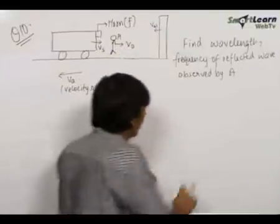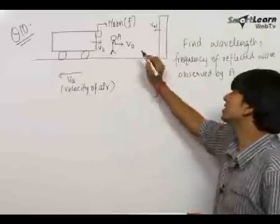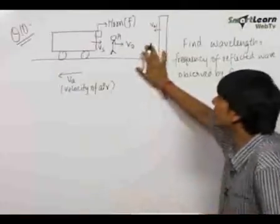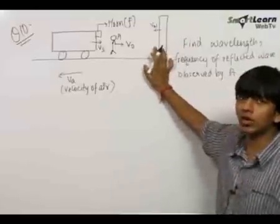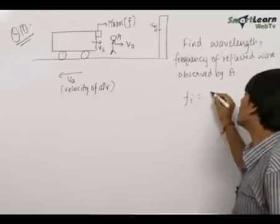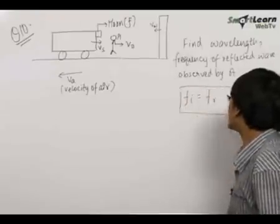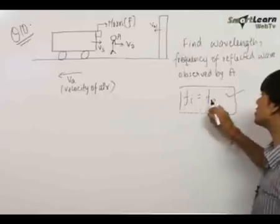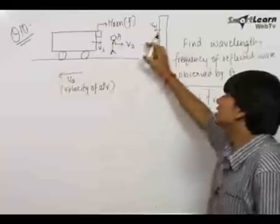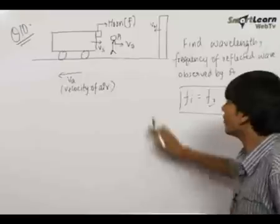In the case of reflection, the number of wavelengths incident per second on the wall is equal to the number of wavelengths reflected per second by the wall. Therefore, the frequency incident on the wall is equal to the frequency reflected by the wall. Always remember: the incident frequency equals the reflected frequency.